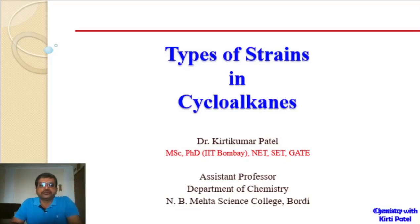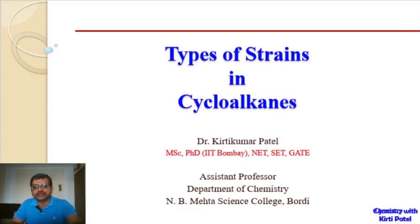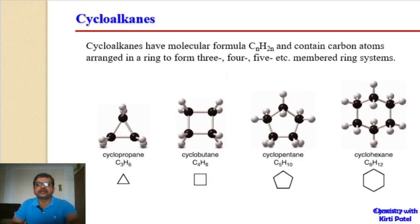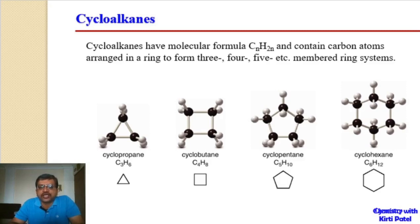Dear students, welcome to our next lecture on cycloalkanes. In the last lecture we had seen about nomenclature of cycloalkanes. Now we will see about what are the different types of strains that are present in cycloalkanes. To recapitulate, cycloalkanes have a molecular formula of CnH2n.